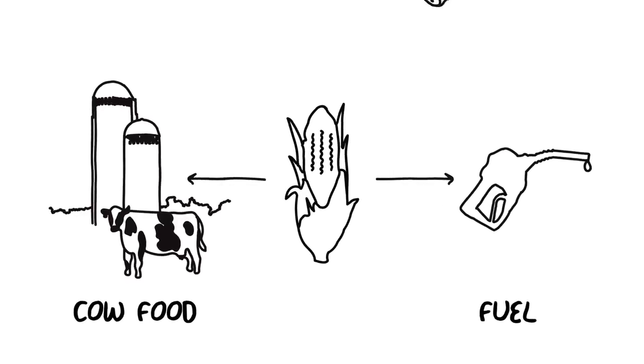It's true. The starch found in the grain can be used to make ethanol, livestock feed, and a tasty summer snack.